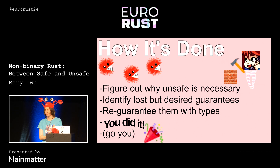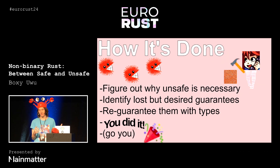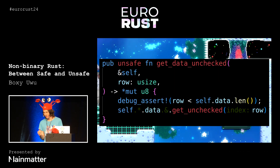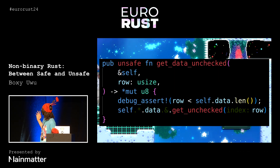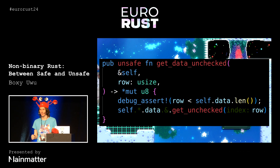Then you can try and write an abstraction that just gives you back those guarantees while you still retain all of the flexibility you need. This is an example from the Bevy game engine, but if you don't know anything about it, that's totally fine.